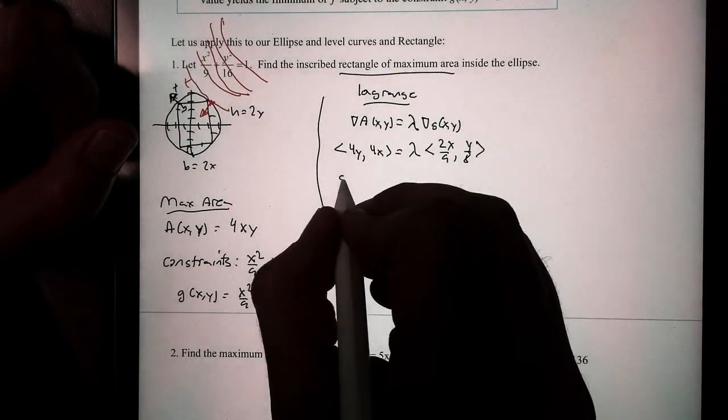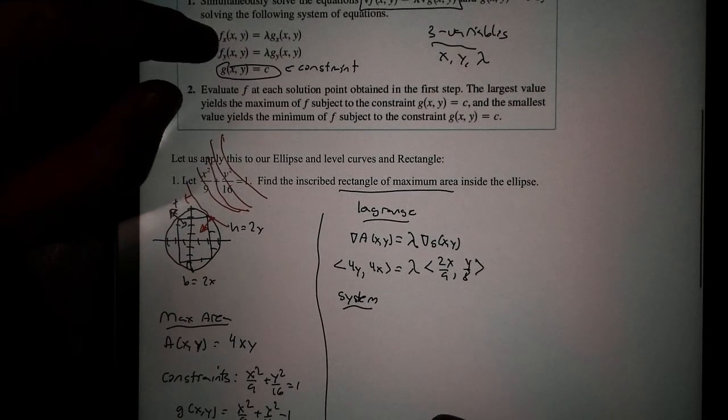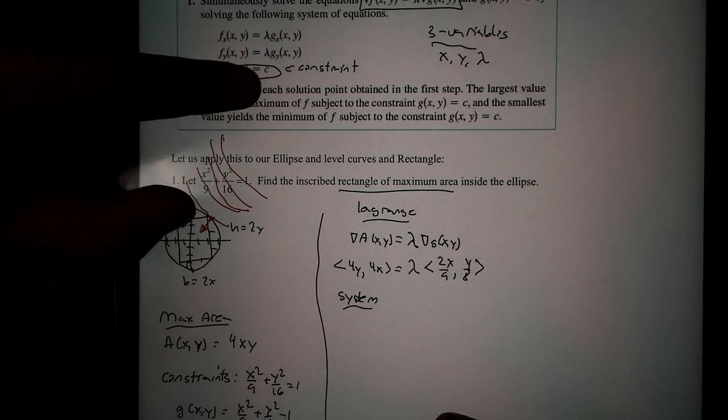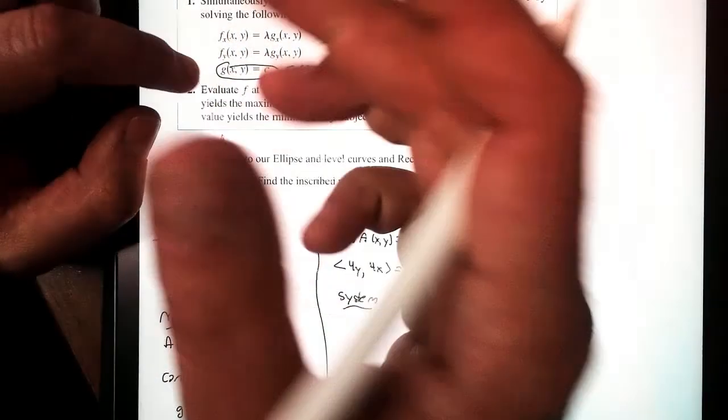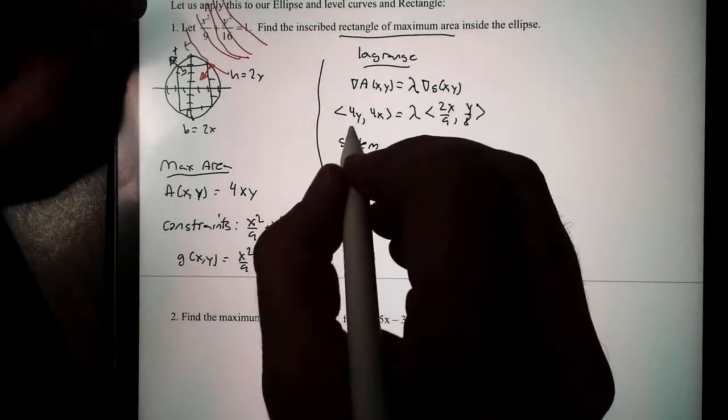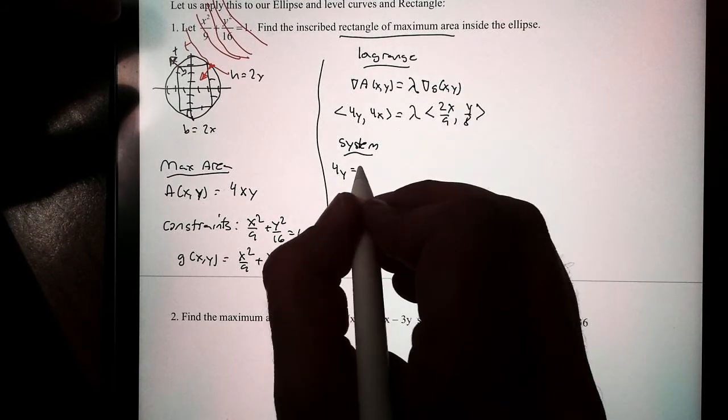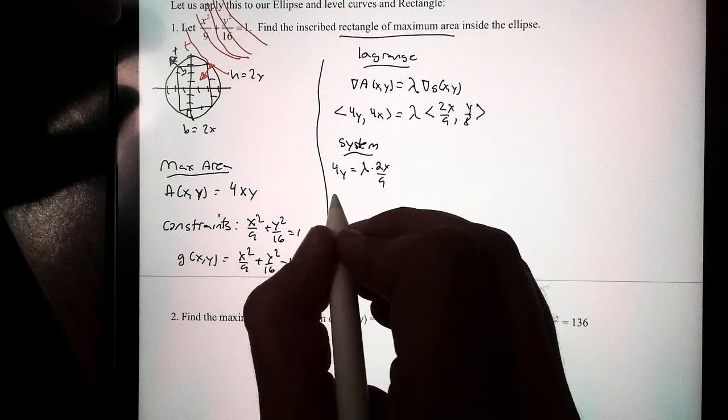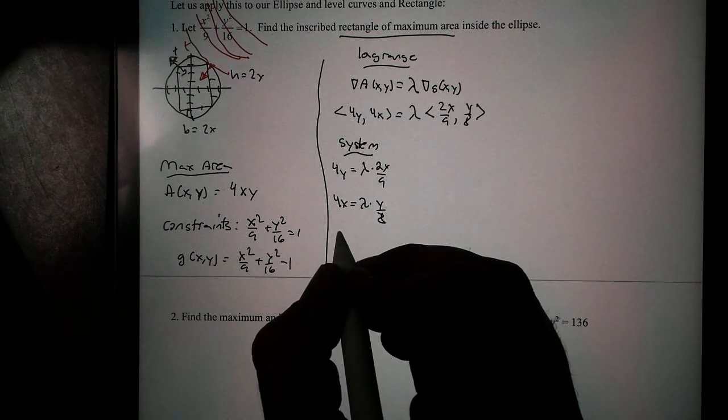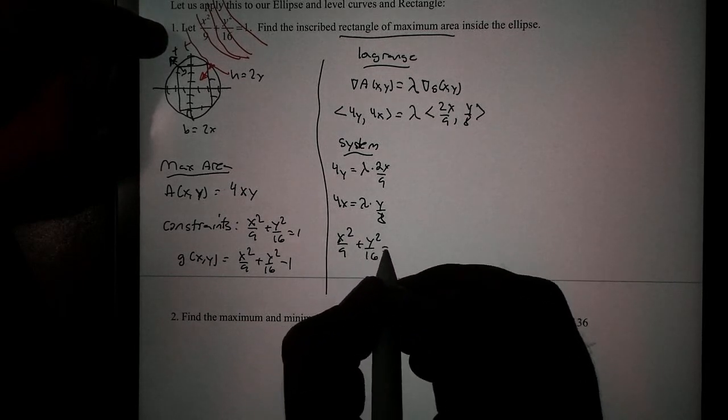So now I can go ahead and write my system of equations. Remember, the system we need, we need the partials with respect to x, set them equal, the partials with respect to y, set them to equal, and our constraint. The constraint is just because we have three variables up here. We need another equation. And the constraint is just laying around. It's like, hey, we'll take you, kind of like me in gym class. All right. So I can set these all equal to each other. The first one says 4y will equal lambda times 2x over 9. The next one, 4x equals lambda times y over 8. And then my last system is my constraint. That's this x squared over 9 plus y squared over 16 equal to 1.